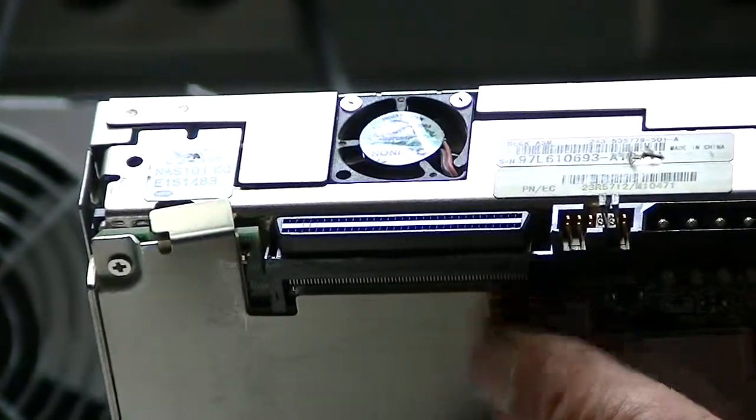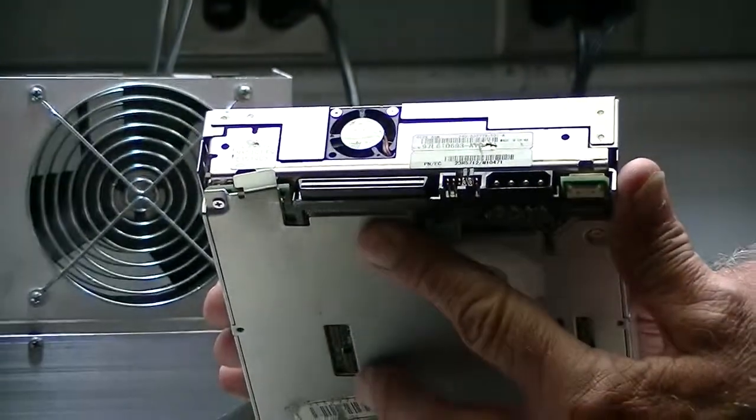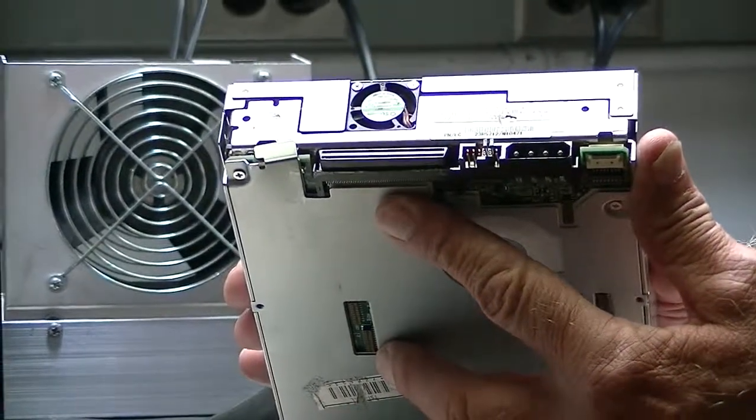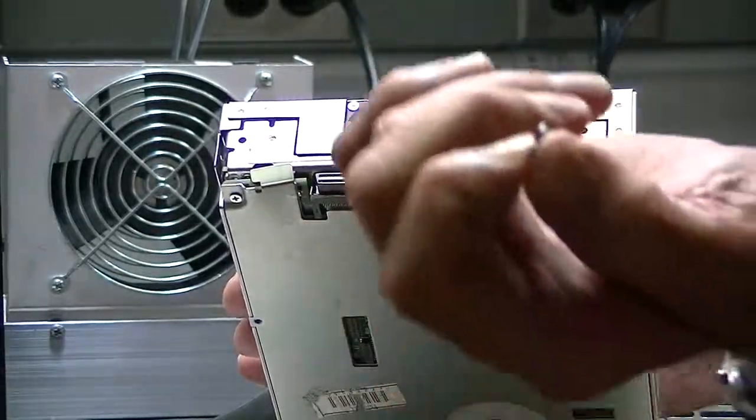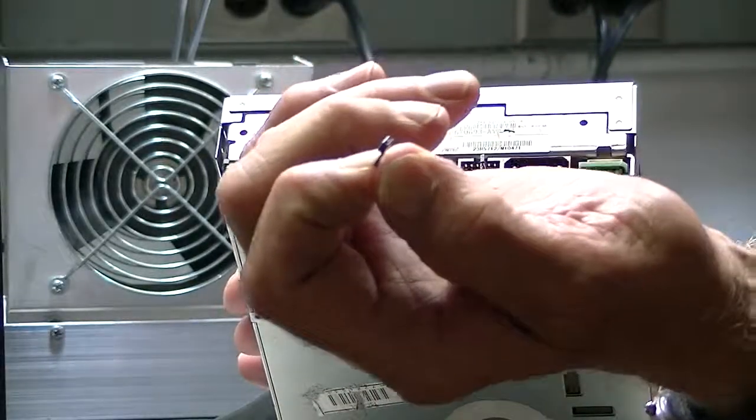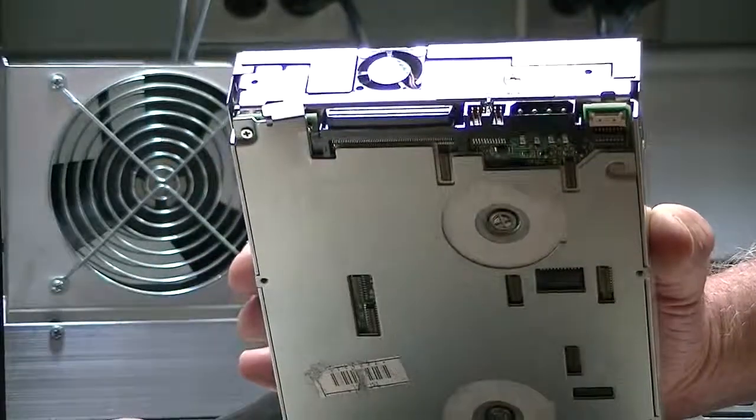So if you have that, take a picture with your cell phone just to make sure you know how those settings are. And then compare them. They're a very small jumper. That's all they are, that big. They're kind of tiny. Just make sure you get them back on in the right place.